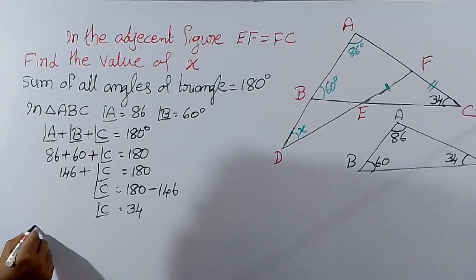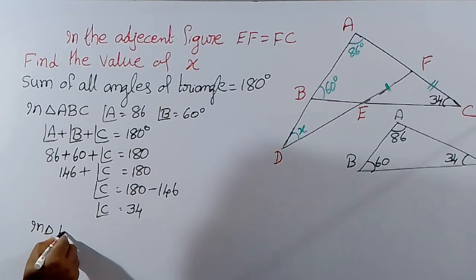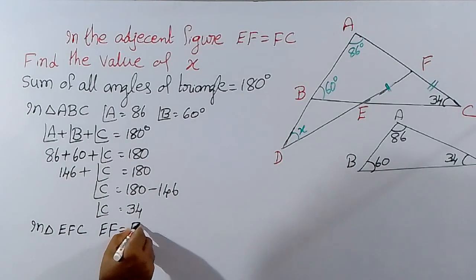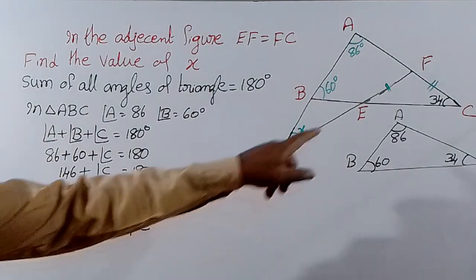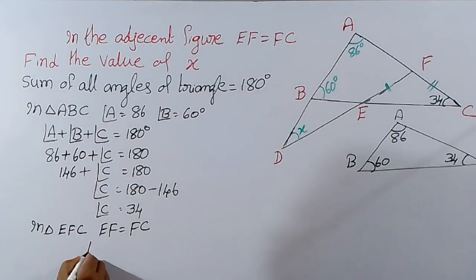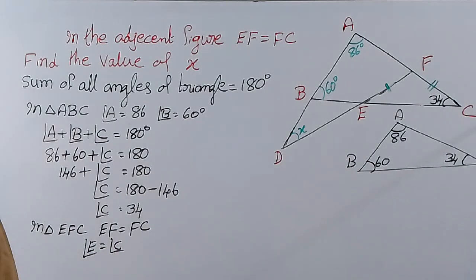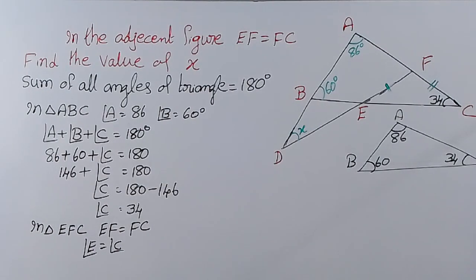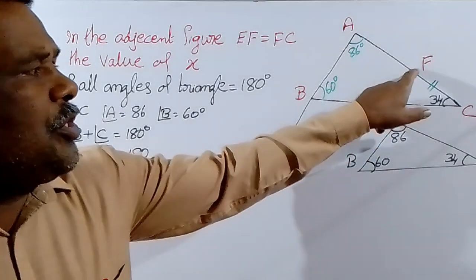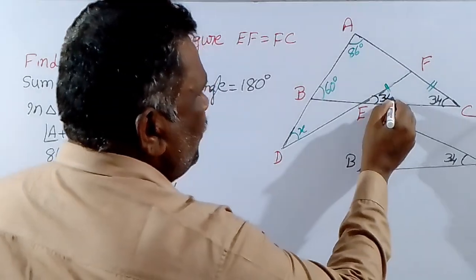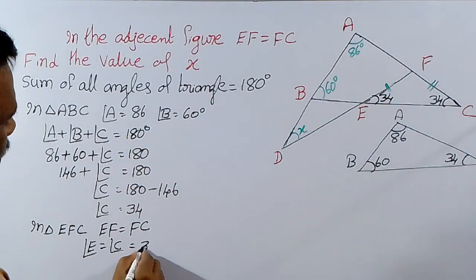Now, in triangle E, F, C — EF is equal to FC, as given by the equal marking. Therefore, angle E is equal to angle C. If two sides of a triangle are equal, then their opposite angles are equal. EF's opposite angle is C, and FC's opposite angle is E. So angle E is also 34 degrees.